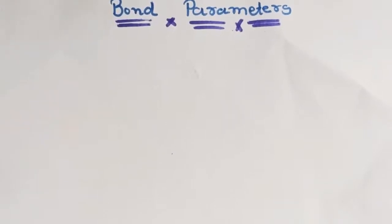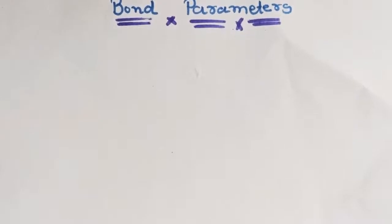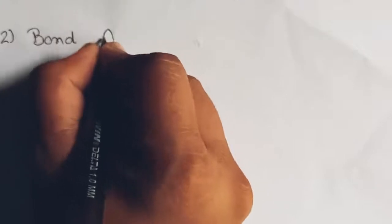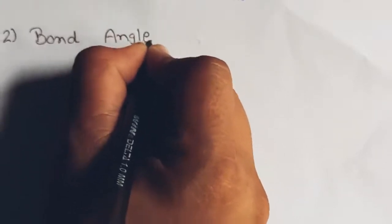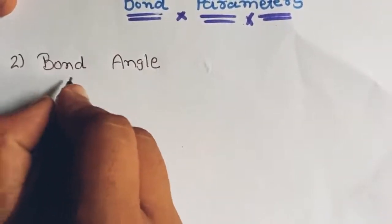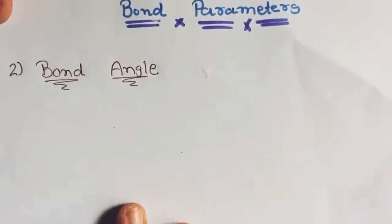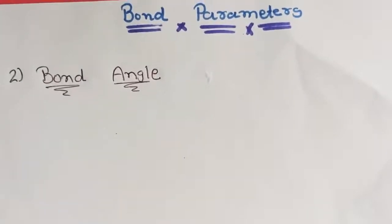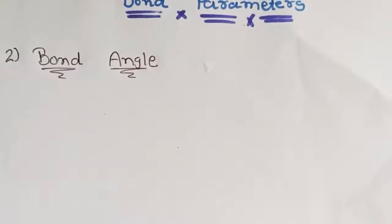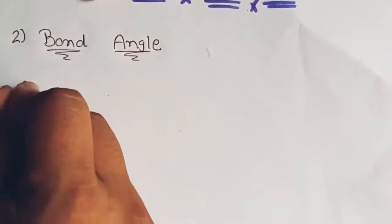Hello friends, in the last lecture we discussed about bond parameters — specifically bond length. In this lecture we are going to discuss the second parameter which is the bond angle. We will see what bond angle is, what differences arise from it, and the factors affecting bond angle — we will look at all of these one by one.